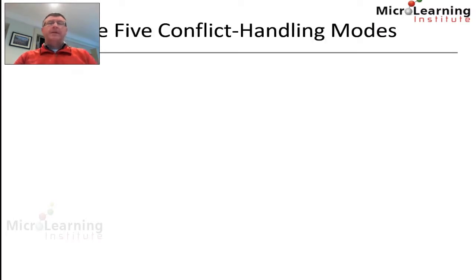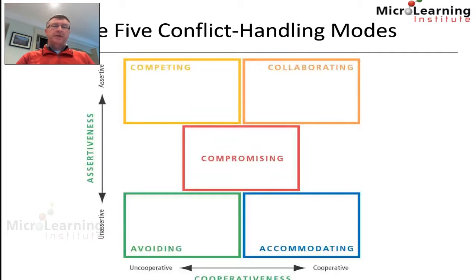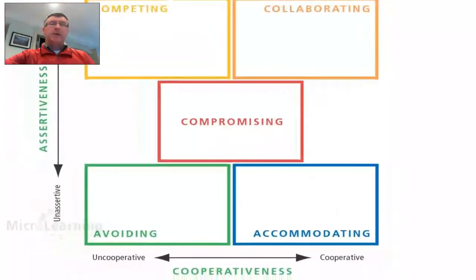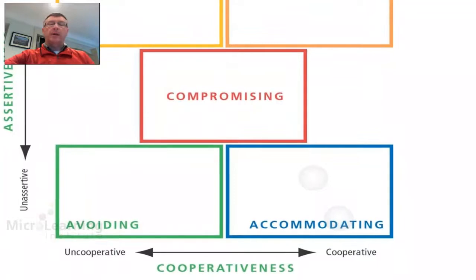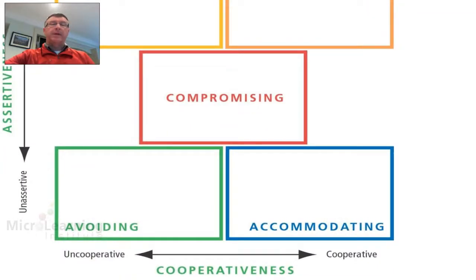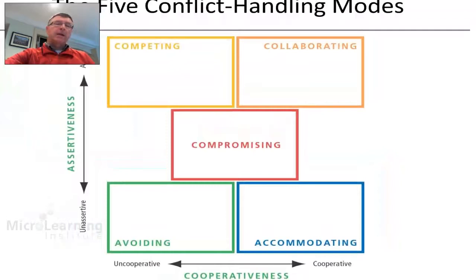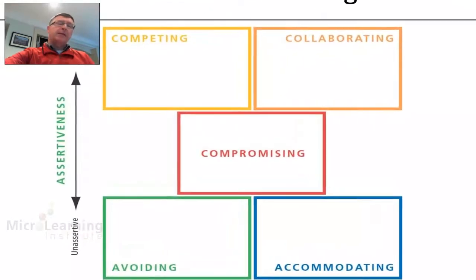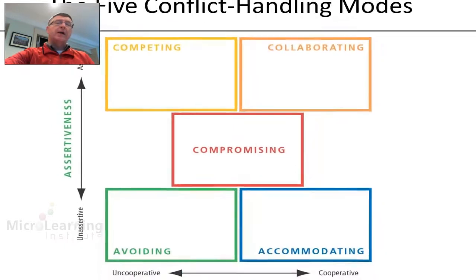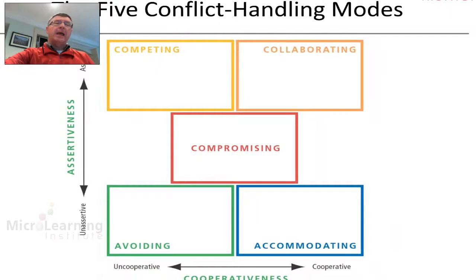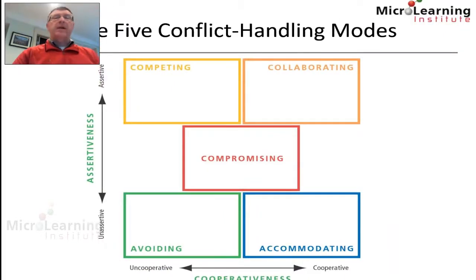Thomas and Kilman identified five conflict handling modes, and visually this model is presented as follows. On the x-axis he talks about cooperativeness, which operates on a range from being uncooperative on the extreme left to being very cooperative on the right. The y-axis is referred to as assertiveness, where the lower end is unassertive and the top is assertive.